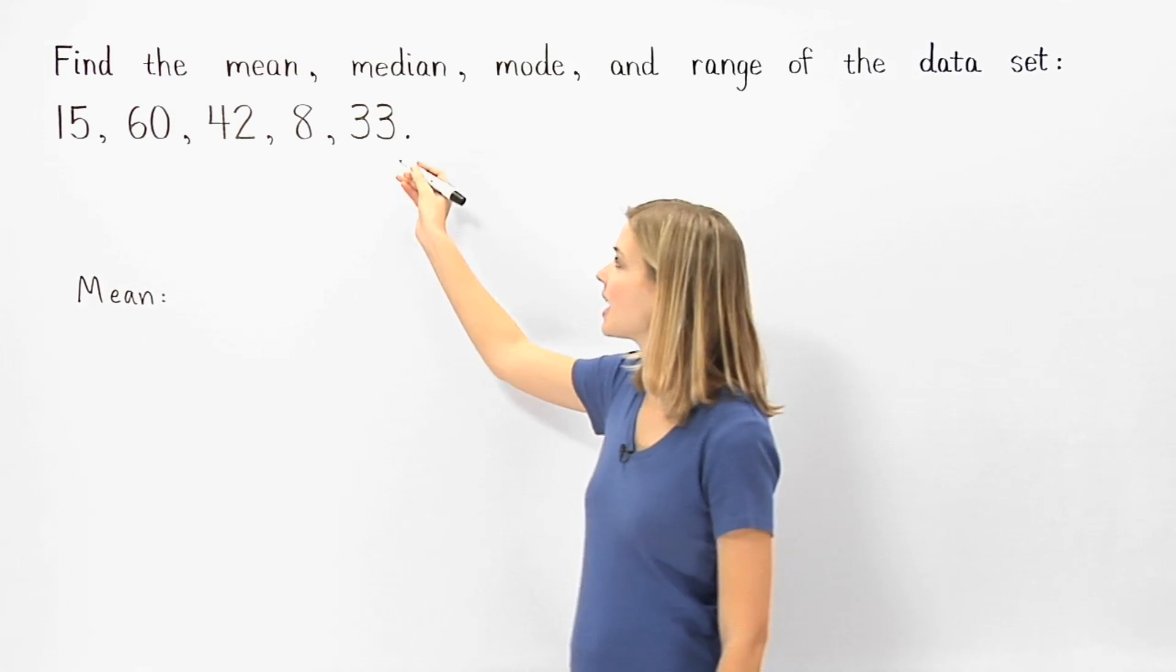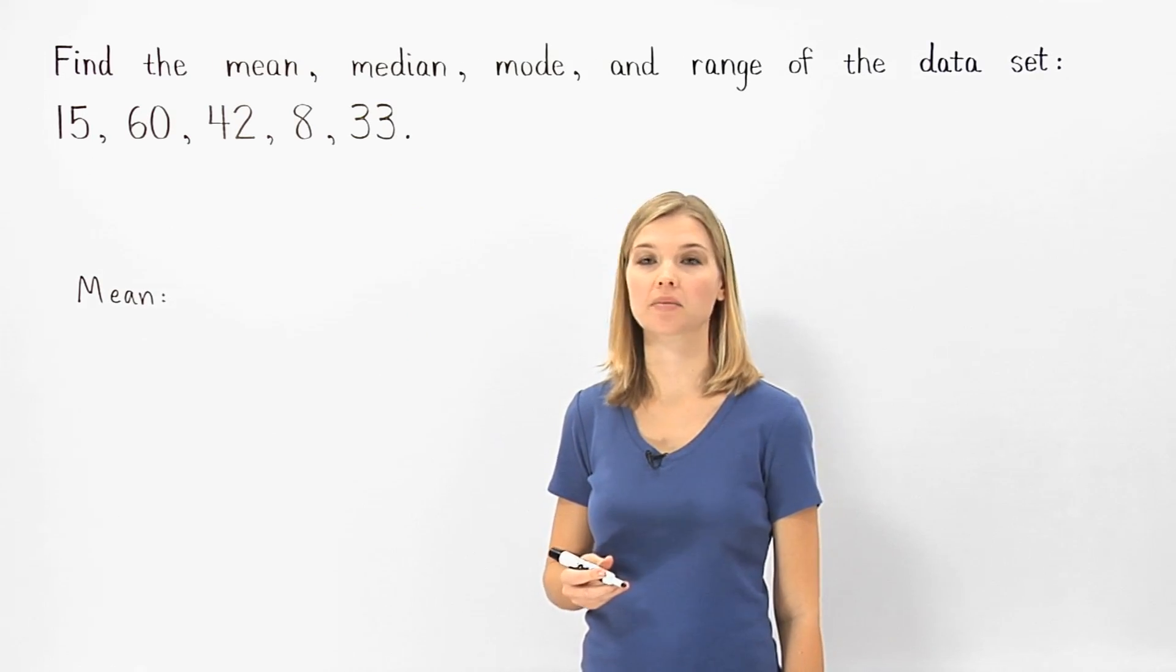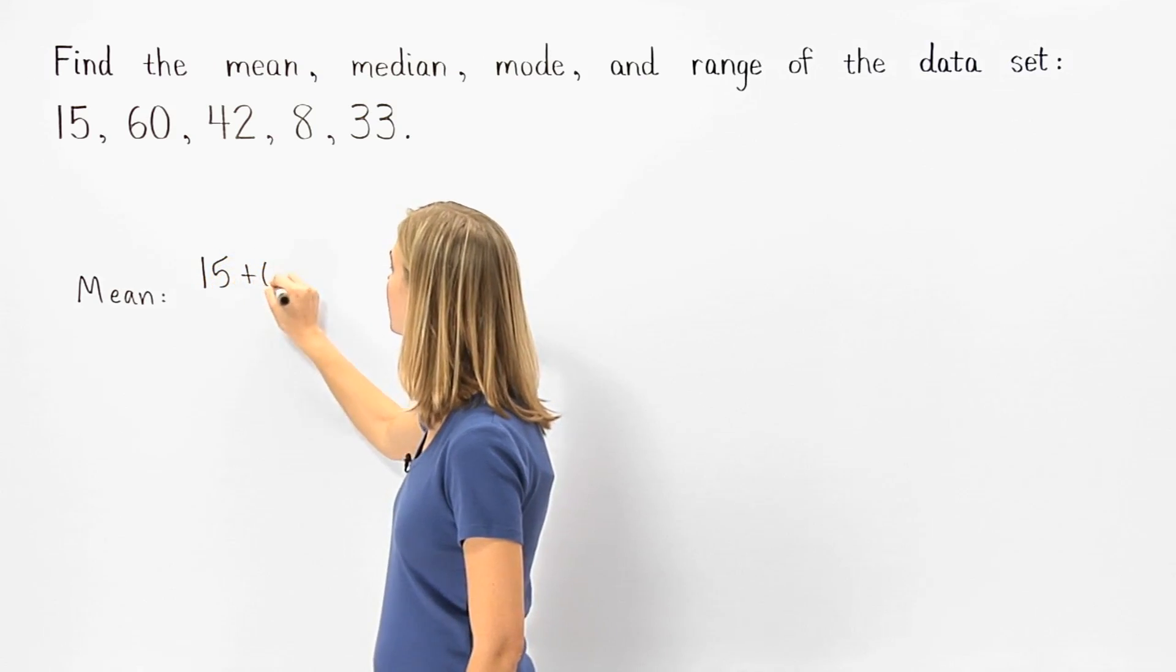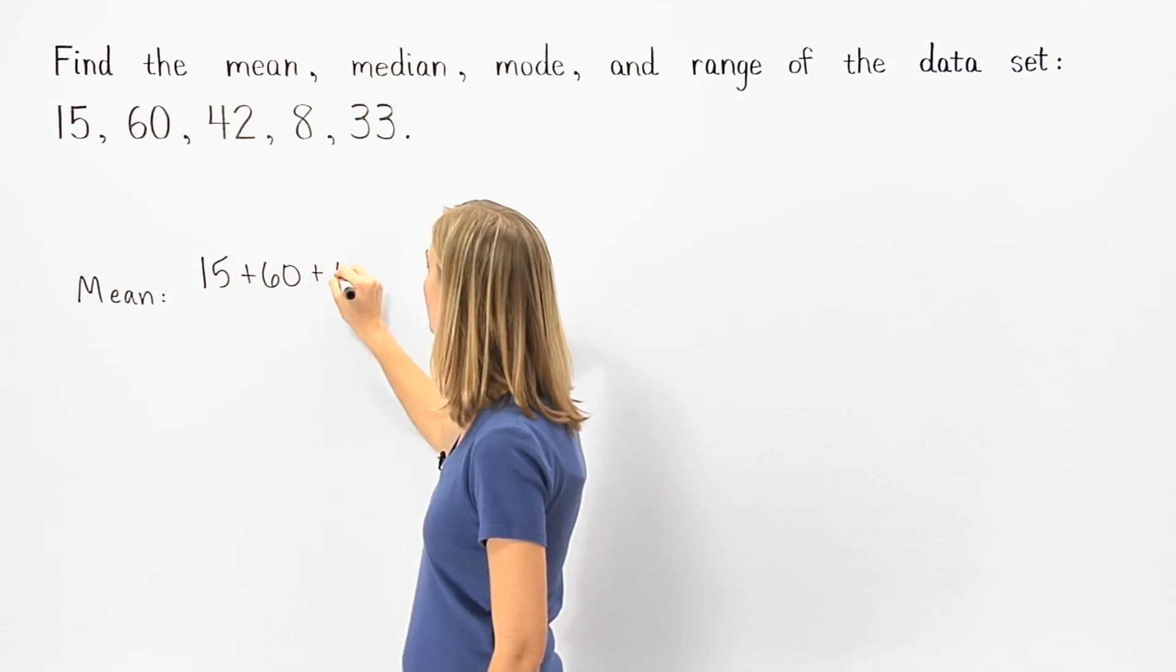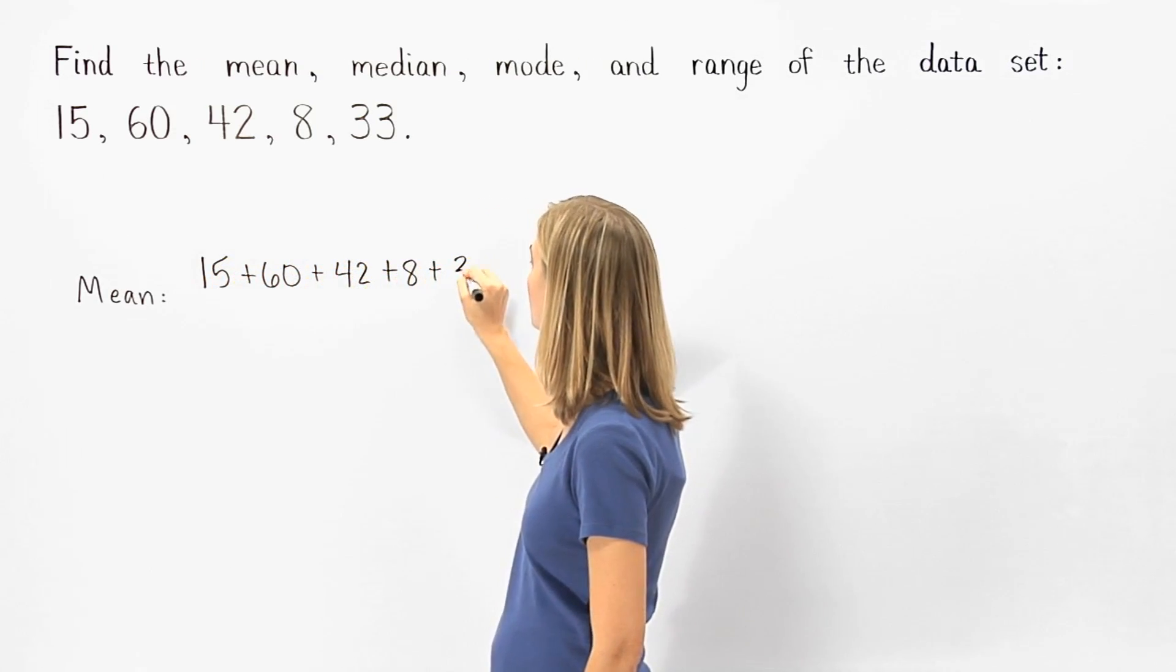So to find the mean of the given data set, we first find the sum of the numbers in the data set. And we have 15 plus 60 plus 42 plus 8 plus 33.